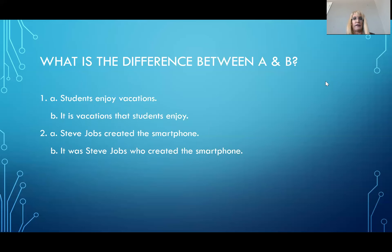So obviously there is a difference. What is the difference? In the second one, letter B in both cases, it's kind of like passive voice in that it's changing the emphasis in the sentence. In number one, we took the object and made it more prominent in the sentence by moving it to the front. So we're emphasizing now vacations as opposed to students. We're changing the emphasis by changing the location in the sentence.